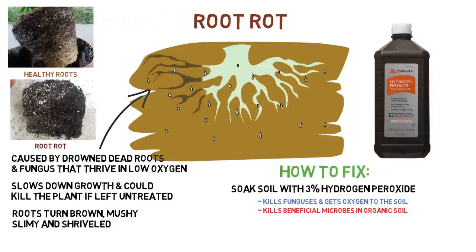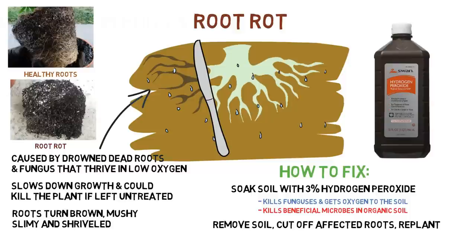The second method is to take the plant out of the pot, rinse off all the soil so only roots remain, cut off the brown parts of the roots, and immediately replant with new soil. This is a pretty advanced technique, so it's only recommended for people with growing experience. But if your plant is going to die anyway, what have you got to lose?